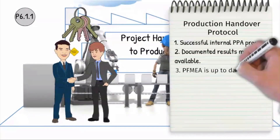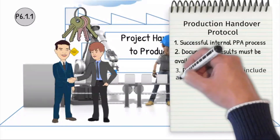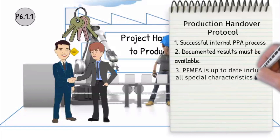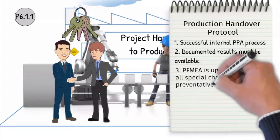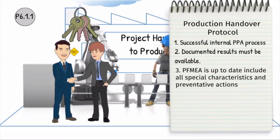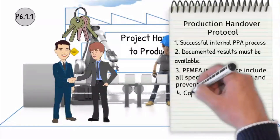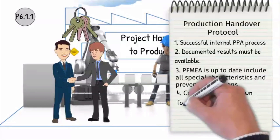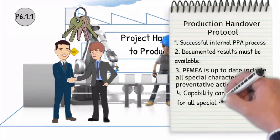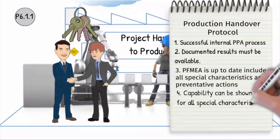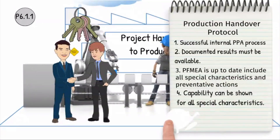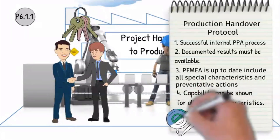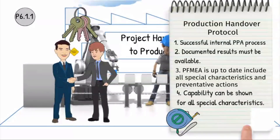The process FMEA and product FMEA must be continuously updated as the production processes are optimized. All tools, test and measuring equipment must be capable and available in the necessary quantities to ensure customer volumes will be achieved.